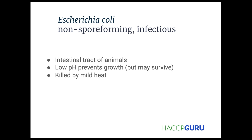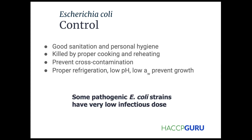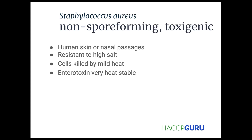E. coli is also found in the intestinal tract of animals. Low pH prevents growth and it's killed by mild heat — pretty similar to Salmonella. How do we control it? Good sanitation and personal hygiene, killed by proper cooking and reheating, prevent contamination, proper refrigeration, and low pH and water activity to prevent growth.